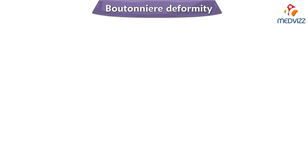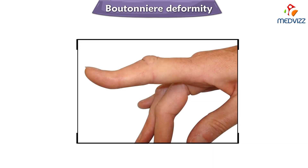Boutonniere deformity is mainly used to describe a deformity of the resting finger in which the proximal interphalangeal joint is flexed. You can clearly see here the proximal interphalangeal joint is flexed and the distal interphalangeal joint is hyperextended. This is what is called boutonniere deformity.